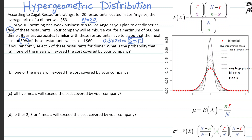Now if you randomly select five of these restaurants for dinner, what is the probability that — part A — none of these meals will exceed $60? So what you're targeting is: if X is the number of expensive restaurants selected, in this case you want P(X = 0).